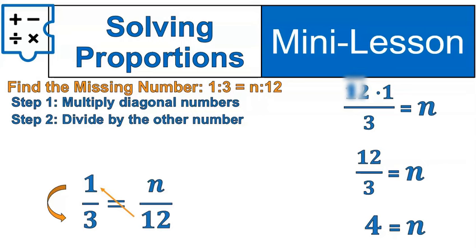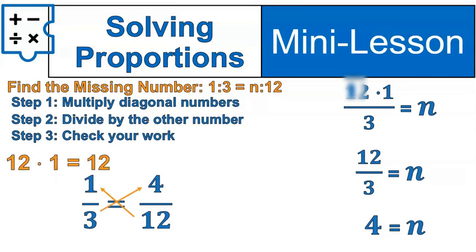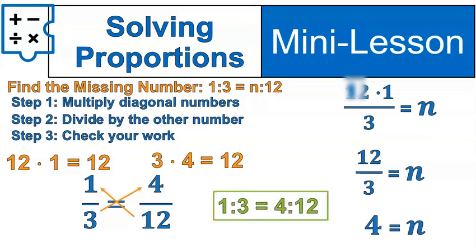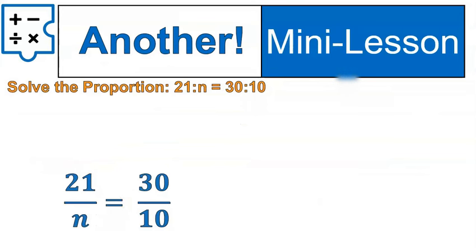But we want to double check our work and make sure that everything that we're doing is correct. So we switch the 4 in there. Check our work using cross multiplying. 12 times 1 and 3 times 4. We've checked our work, so this is absolutely correct. N was equal to 4. Nice. One more. Another one.